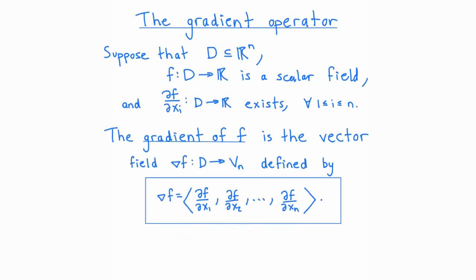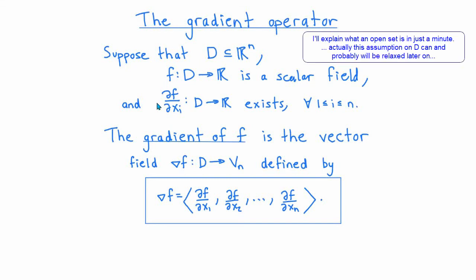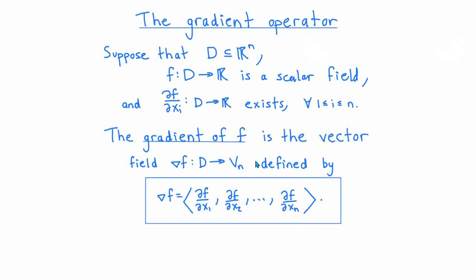The first operator on our list is the gradient operator. The gradient operator takes scalar fields on Rn and turns them into vector fields on Rn. A scalar field on Rn is just a function from some subset D of Rn to R. We assume that D is an open set and that all the partial derivatives of F on D exist. The gradient of F is defined to be the vector field whose ith component is the partial derivative of F with respect to Xi.